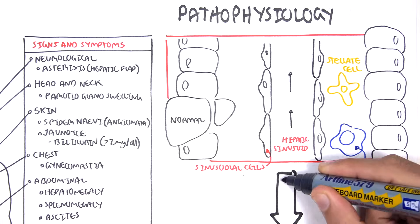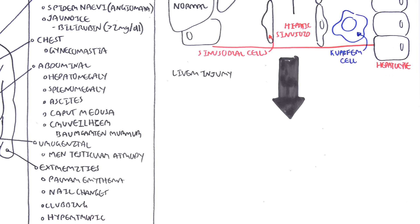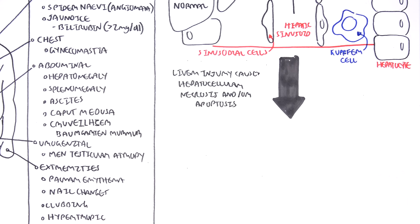You also have your Kupffer cells, which are essentially your macrophages of the liver. The causes of liver damage we looked at earlier, such as autoimmune hepatitis, Wilson's disease, medication, alcohol, can all lead to liver injury, causing hepatocellular necrosis and or apoptosis.